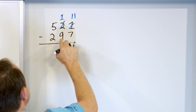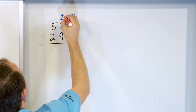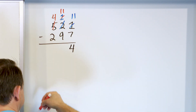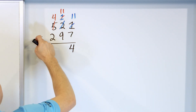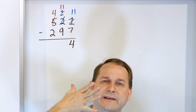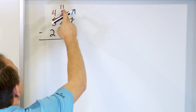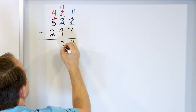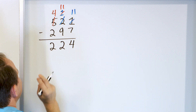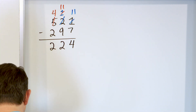Now what is 1 minus 9? We can't do that because 1 is not big enough, so we have to make this 11 by borrowing and making the hundreds digit a 4. So 11 minus 9: start with 11 and go down 10, 9, 8, 7, 6, 5, 4, 3, 2. We land on 2 — 11 minus 9 is 2. Now what is 4 minus 2? Start with 4, take away 2, you have 2. So we have 224.